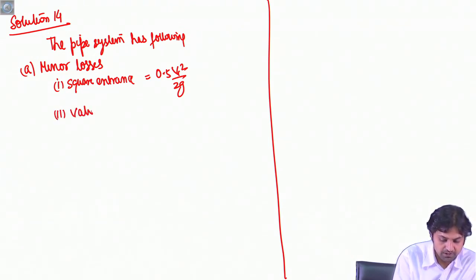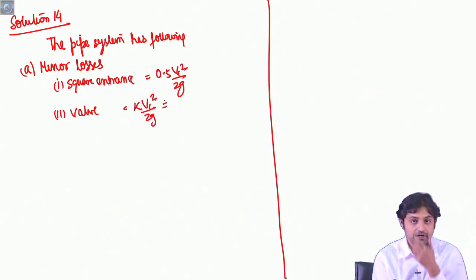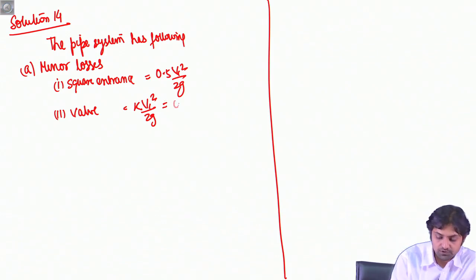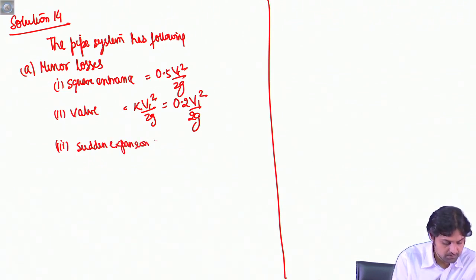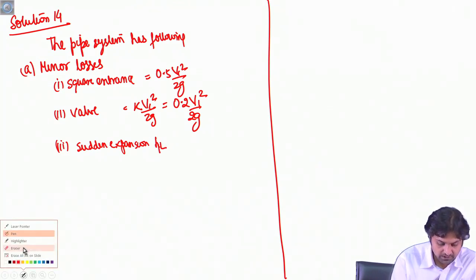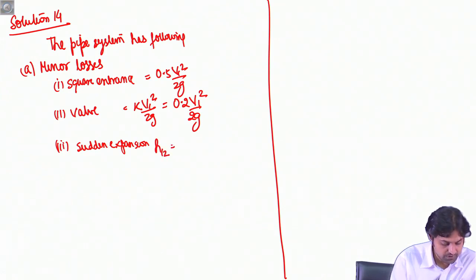Since there is a valve, there is a minor loss equal to k · V1² / 2g, where k is given in the question as 0.2, so this loss is 0.2 V1² / 2g. The third minor loss is the sudden expansion, denoted h12, equal to (V1 − V2)² / 2g.